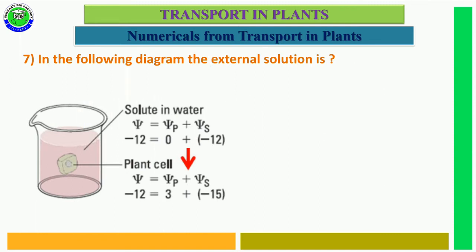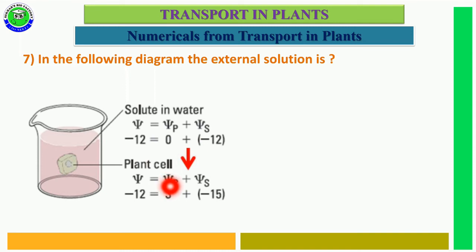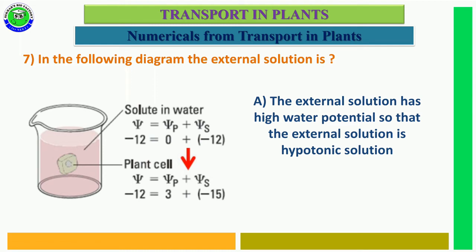Question number 7. In the following diagram, the surrounding solution and plant cell cytoplasm have equal water potential, but there is no pressure potential in the external solution while there is pressure potential in the cell. So the surrounding solution is considered hypotonic, and water movement takes place from the surrounding into the cell — this is called endosmosis.